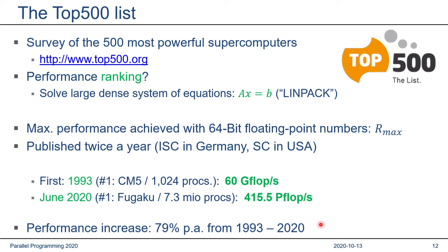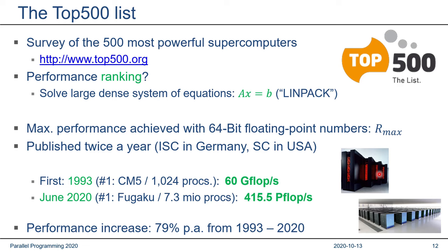Here are two pictures: one of the number one system in 1993, the CM5 — if you know the film Jurassic Park, there are one or two scenes with a CM5 in the background, as it was the leading supercomputer of the day. The other picture shows the Fugaku system at the Riken Research Center in Kobe, Japan.